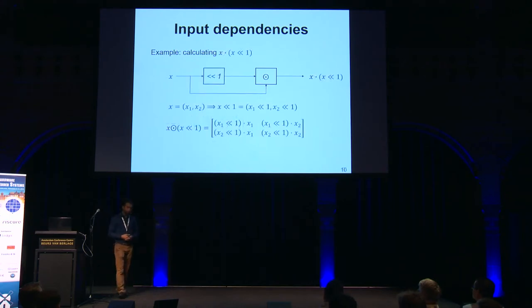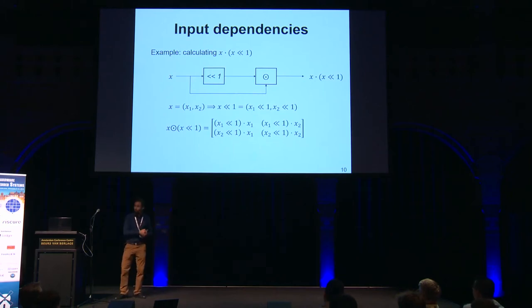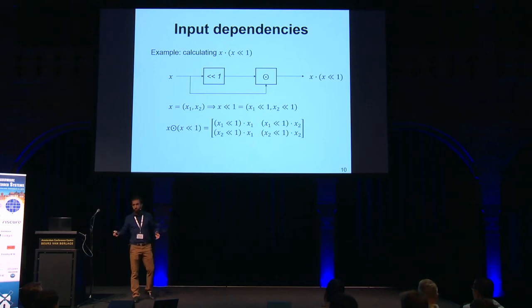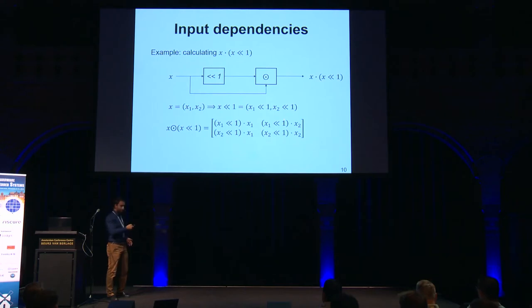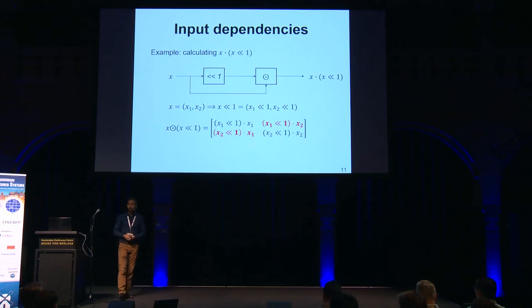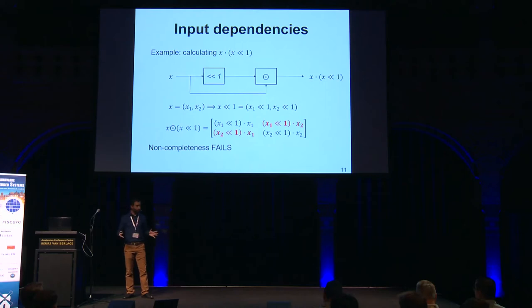Now consider another small example: calculating X times X shifted once. Before the non-linear operation, we execute a linear operation — it could be any linear function, even the identity. We see the result of the linear function, and then the result of the non-linear function. Looking at the dangerous cross-products now, due to these dependencies, non-completeness is broken. This is an important security flaw.